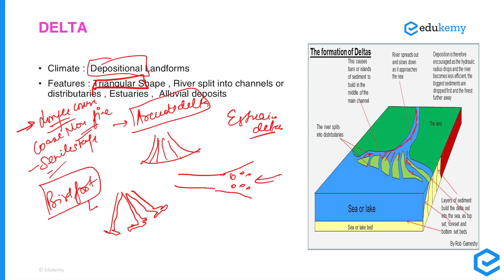In an estuarine delta, there is a continuous battle between river sediments and sea waves — sea waves try to sweep sediments away while the river brings more in. Ultimately, sediments accumulate close to the edges of the estuary while the middle part is swept away. Overall, we have covered landforms associated with fluvial processes: valleys, gorges, canyons, meanders, floodplains, point bars, and delta. Thank you and have a nice day.